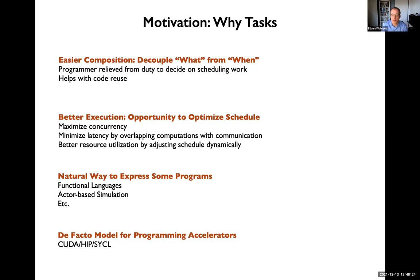Instead of writing a for loop where a counter goes in a particular direction, you say 'for each in a range,' and in principle that range can be traversed in order or even in parallel. Removing scheduling decisions from your responsibility allows you to potentially improve code reuse. On the runtime side, there is more opportunity to optimize the schedule, maximize concurrency or optimize resource utilization, and minimize latency by overlapping computation with communication.